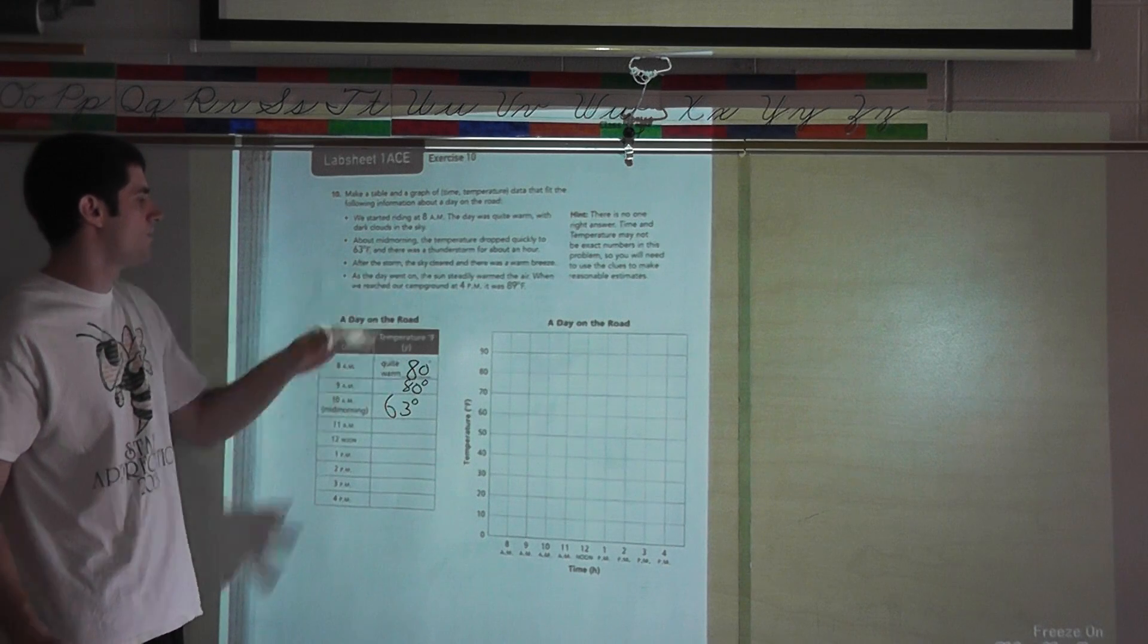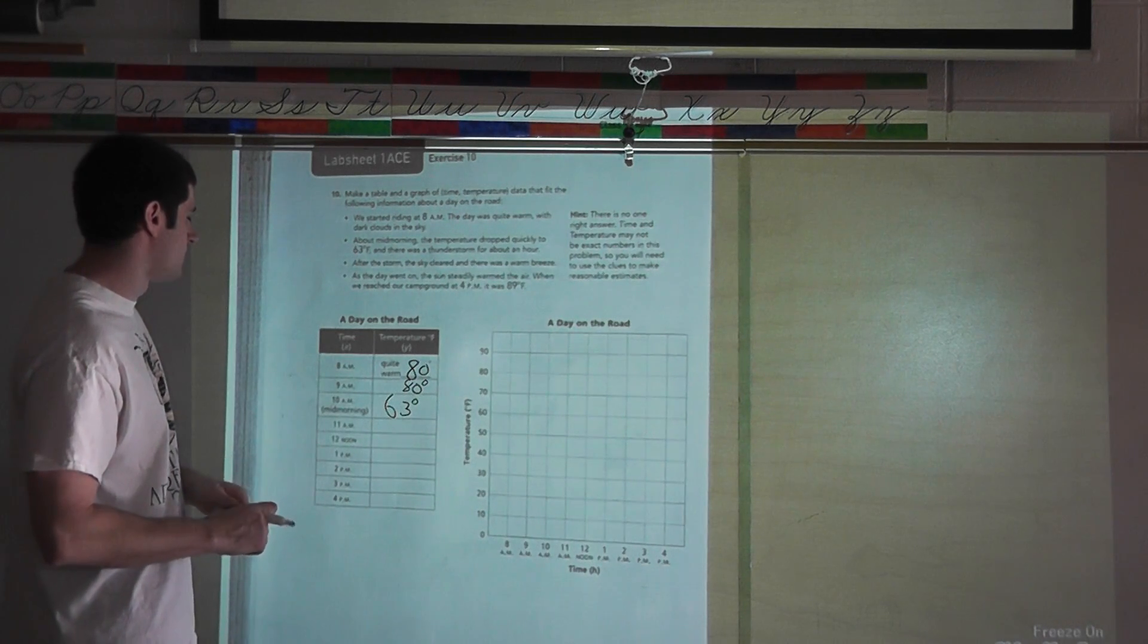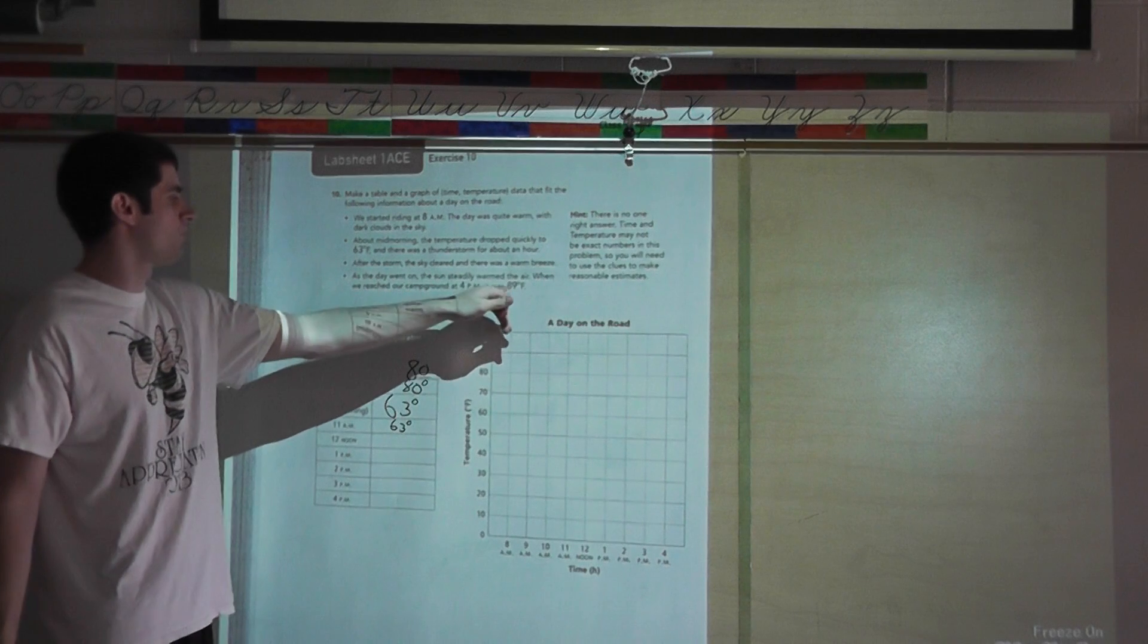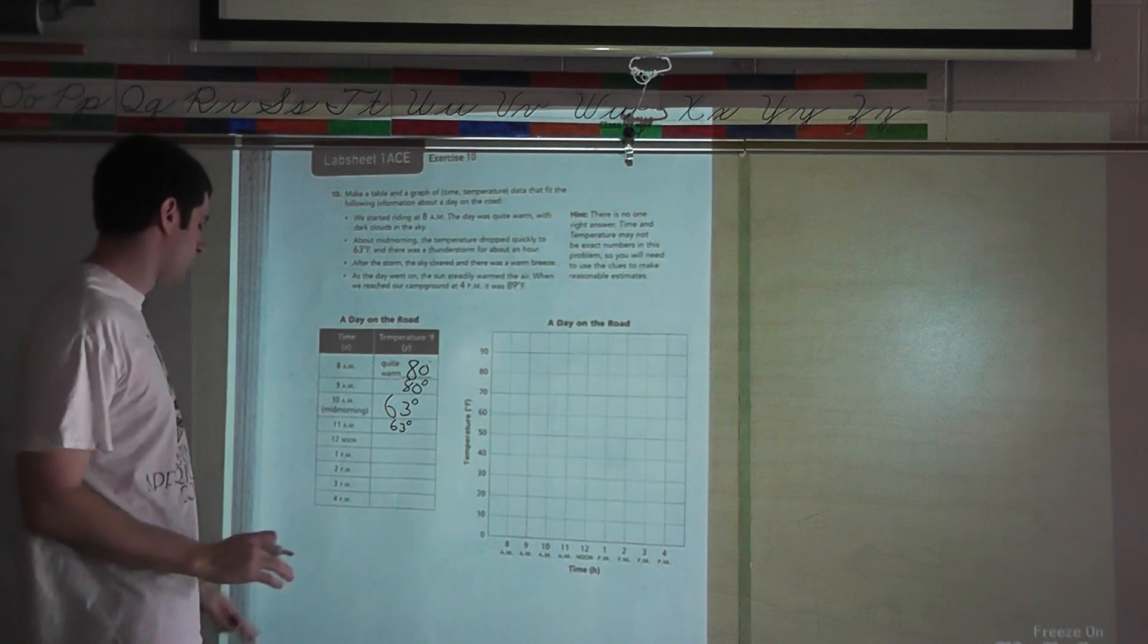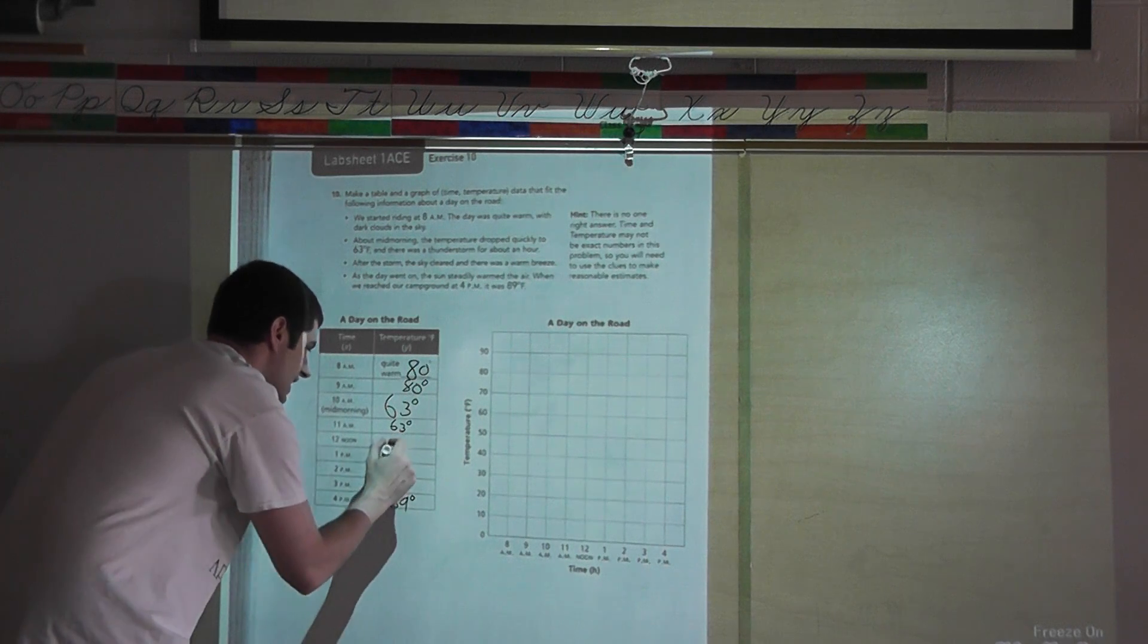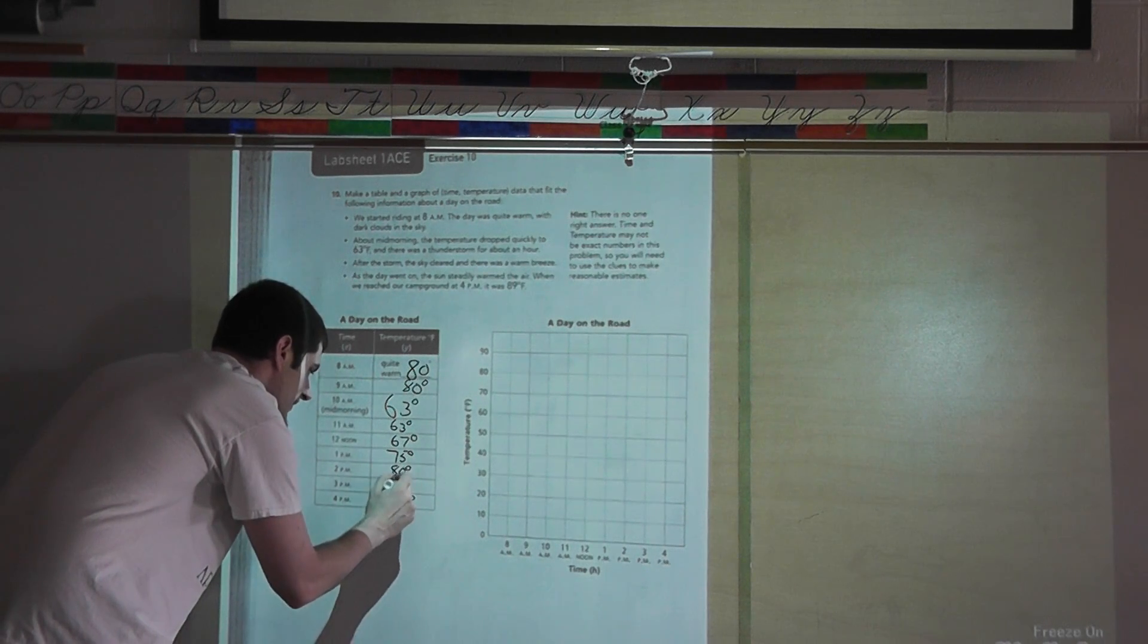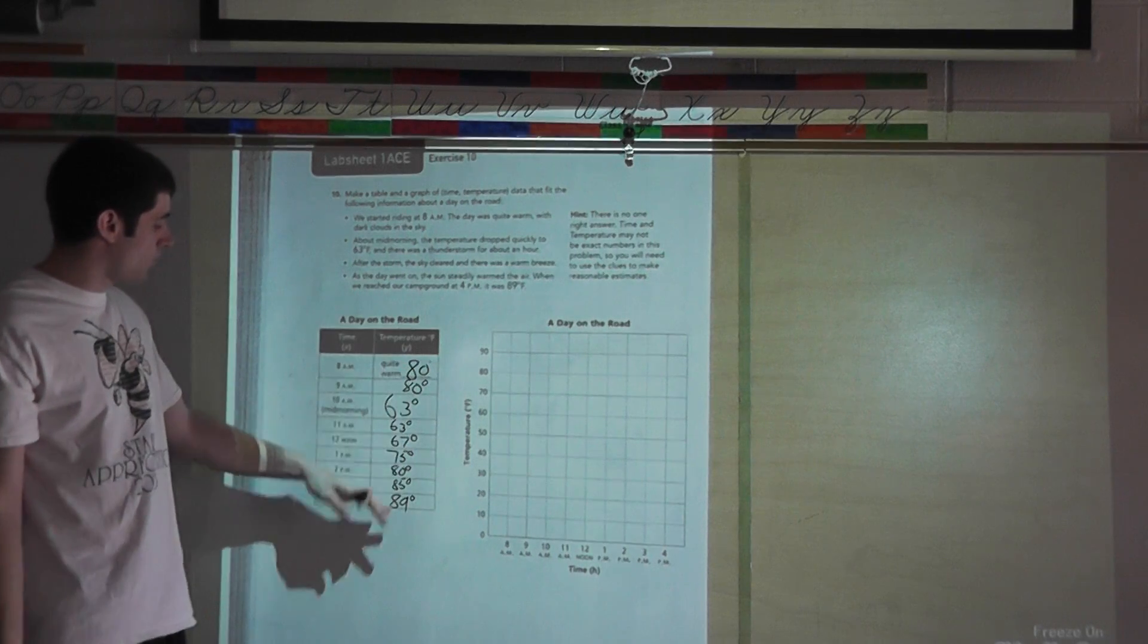At mid-morning, it was 63 degrees because there was a thunderstorm for about an hour. So at 11 o'clock, it's still 63 degrees here because that storm is still going on. As I'm charting here, I know that the temperature is going to steadily increase. And at 4 p.m., I'm going to end at 89 degrees. Maybe at noon it goes to 67 degrees, 1 p.m. 75 degrees, 2 p.m. 80 degrees, and at 3 p.m. 85 degrees.